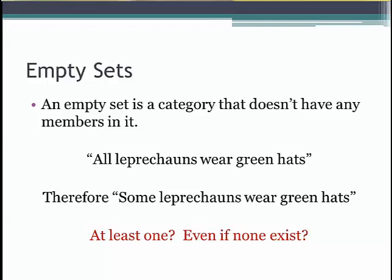How can this be, since earlier we said that if an A claim is true, then the I claim must also be true? The problem is that if the subject of the A claim is an empty set, we can't infer that the I claim is true. We can only infer the truth of the I claim from an A claim if the A claim is talking about something that actually exists.